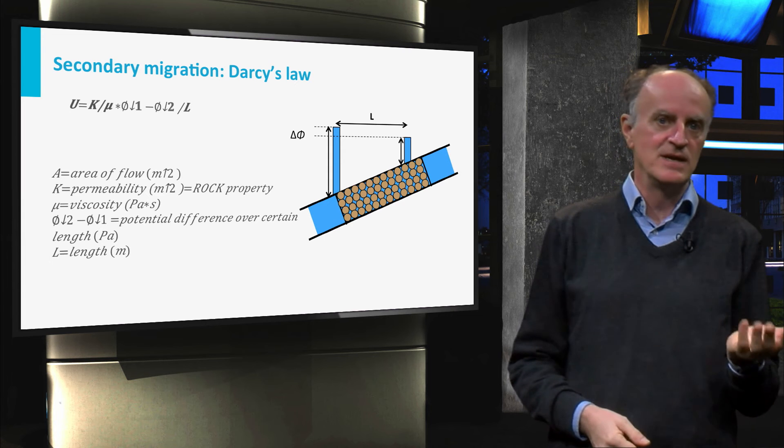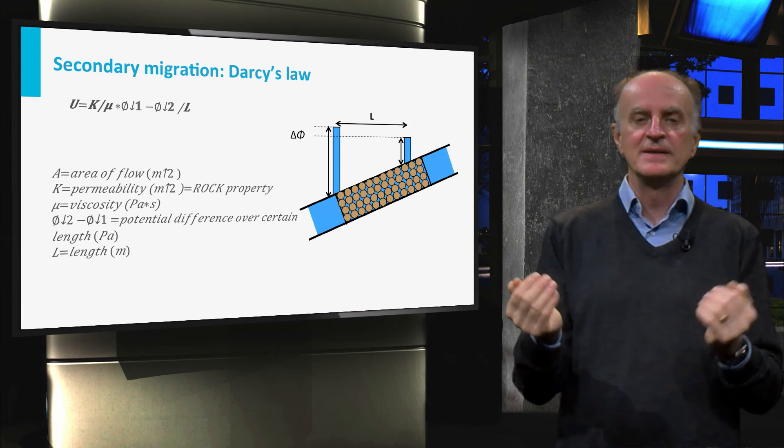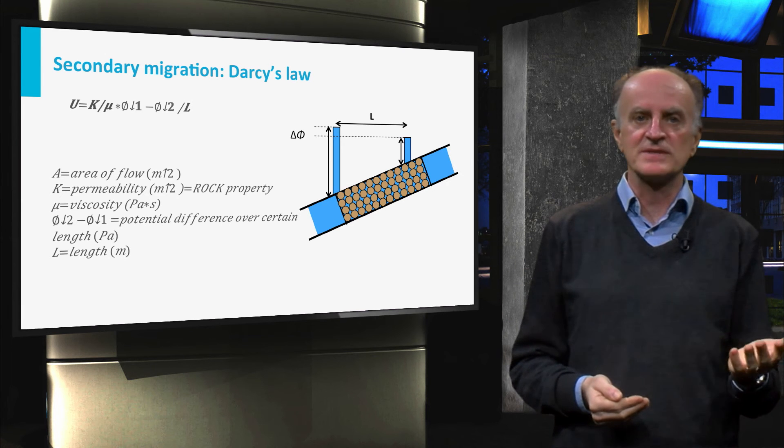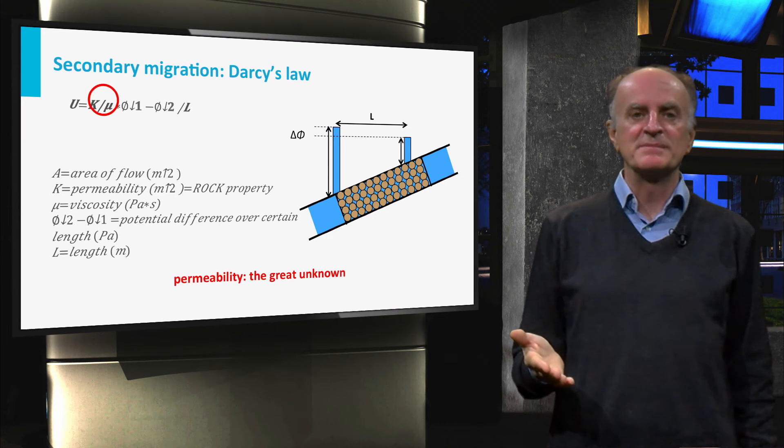On the other side, flow is directly proportional to the pressure difference and to the permeability. Viscosity and pressure differences can be measured. The big unknown is the permeability K.